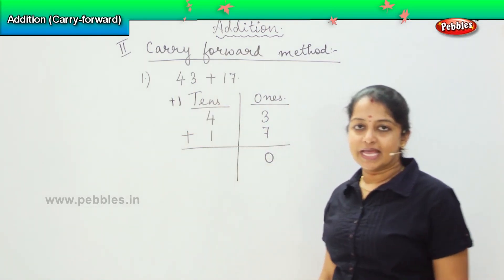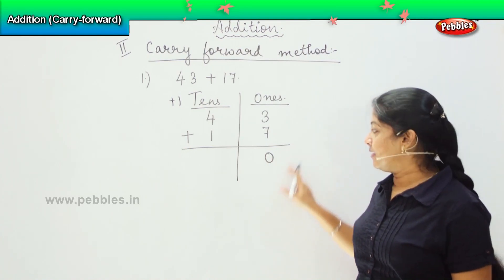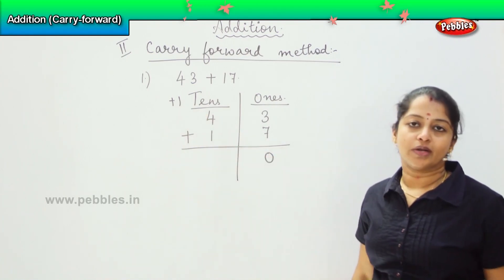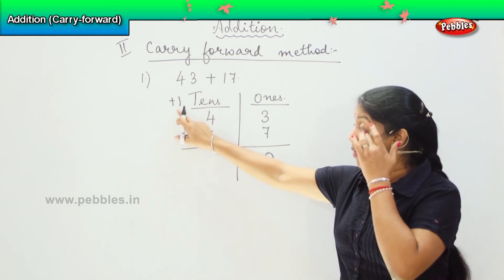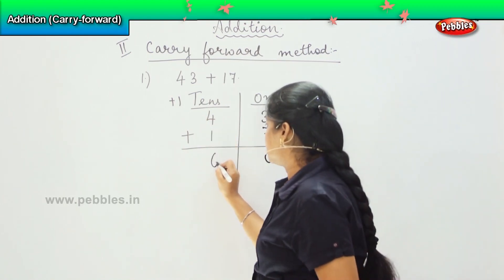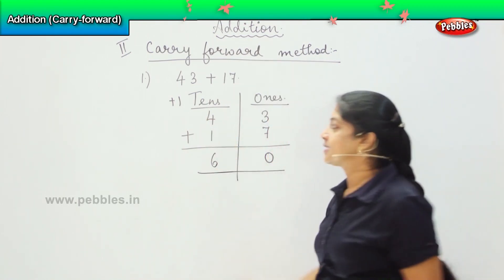This is called carry forward, which means that 0 I will write here and the 1 I will carry forward here and then I will count it with the tens value. So 1 plus 4 is 5, and 5 plus 1 is 6. So my answer is 60.